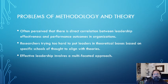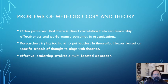Problems with methodology and theory: it is often perceived that there is a direct correlation between leadership effectiveness and performance outcomes in organizations. Researchers try too hard to put leaders in theoretical boxes based on specific schools of thought to align with theories. Effective leadership involves a multifaceted approach, and basically these things are more complex than most researchers may be willing to accept. They oftentimes don't align totally with their points of view, so they may attempt to adjust things that don't necessarily need to be adjusted.